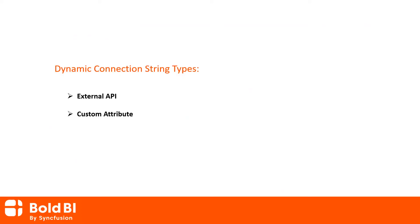You can get a dynamic connection string in two ways: one is by using an external API, and another is by using a custom attribute. I will explain the external API functionality in another video. Now I will talk about the custom attribute functionality and how to configure a custom attribute.